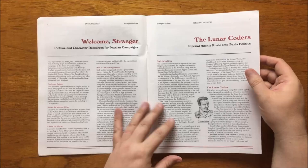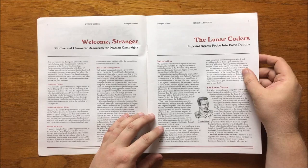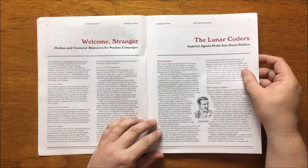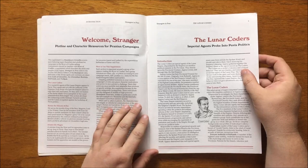First up is a section with the heading Welcome Stranger, which details the idea behind the supplement. We are provided with three sets of characters that are powerful foreign visitors to the River of Cradles. These are a group of five masterful Lunar Agents called the Coders who act with the authority of the Red Emperor,